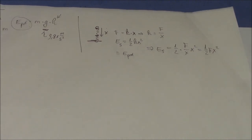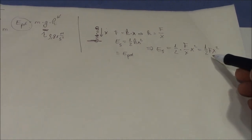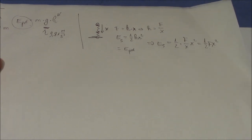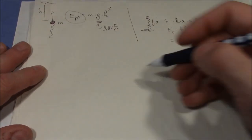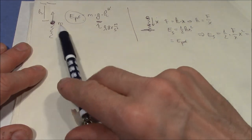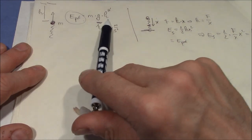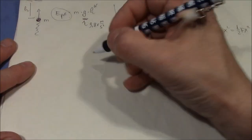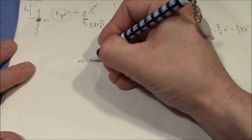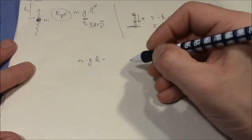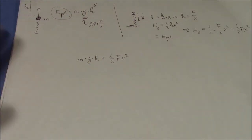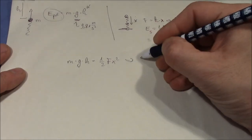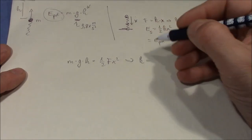We can measure the force F, we can measure the distance x. So we now can put the left and the right equation together, so we have m times g times h equals one half F x.